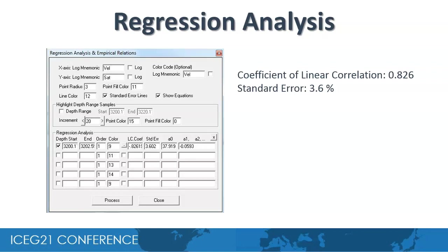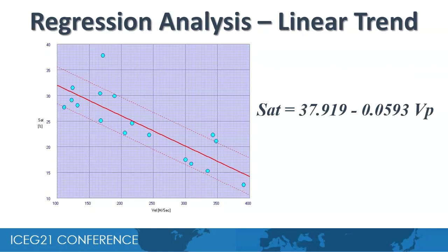The velocity moisture data is used in regression analysis to derive an empirical relation between velocity and moisture. The coefficient of linear correlation is 0.826 with a standard error of only 3.6%. The cross plot of velocity and moisture shows the best-fit linear regression line, with dashed standard error lines on both sides, indicating most data points are within the standard error limits. The empirical relation between velocity and moisture saturation can be used to transform velocity data from seismic refraction surveys into moisture content.